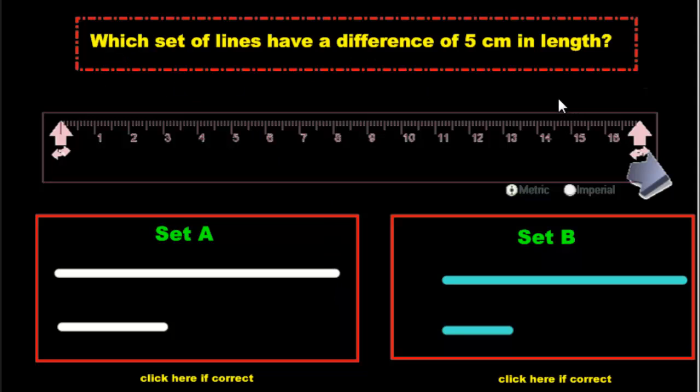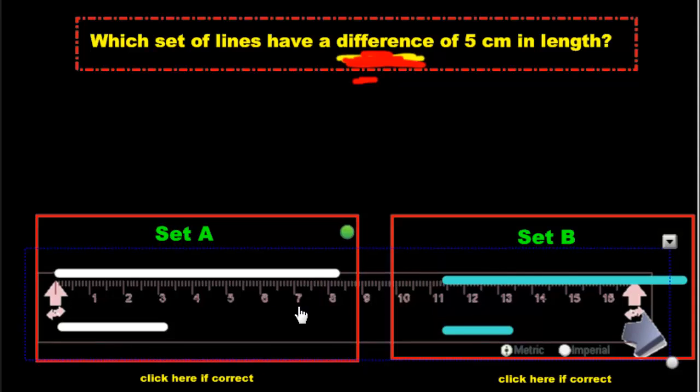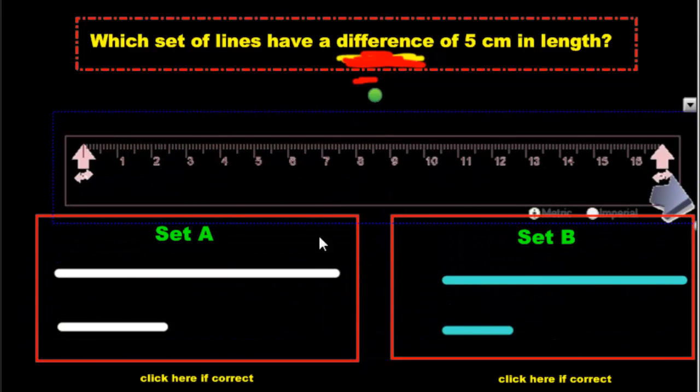Here's the last question. Go ahead and try it on your own. Underline the keyword. Here's what you should have underlined. Which set of lines have a difference? That's the keyword. And difference means takeaway. That's another one of our takeaway words. We want a difference of 5 centimeters in length. So again, we'll take our ruler. We'll put it here. We'll say, okay, that's here. Let's stretch it out a little more.